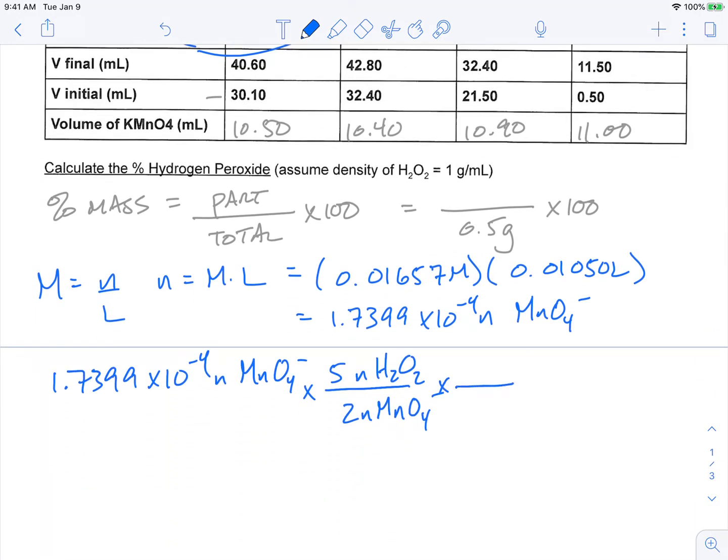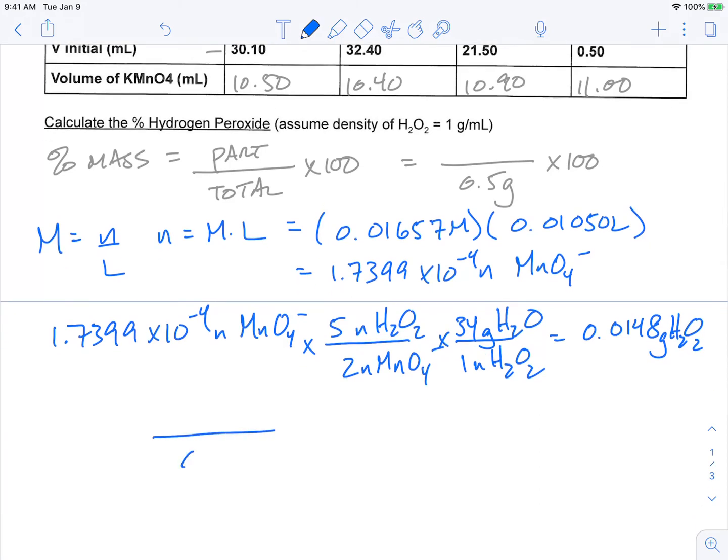Next thing we would do is convert from moles of H2O2 to grams of H2O2. And this is going to come from our molar mass, and our molar mass is around 34 grams. So if I take 1.7399 × 10^-4 times five divided by two and then times 34, we're going to get 0.0148 grams of H2O2.